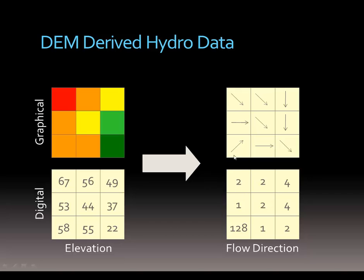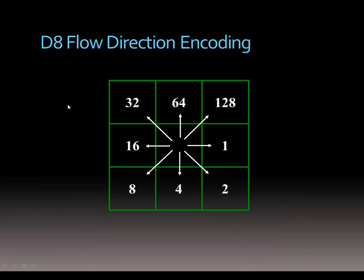You'll notice that these are categorical flow direction values. They're established in north, south, east and west, or northeast, southeast — no longer in degrees as with slope and aspect. This is the D8 flow direction, classifying direction into eight groups, established as values 1, 4, 8, and so on up to 128, to indicate whether it's flowing north, east, southeast, or south.